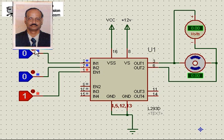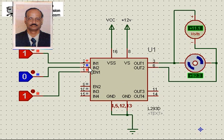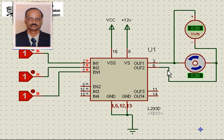Now the moment I make one of them as 1, you see the motor starts rotating at a particular speed. You can see the voltage here is about 11.1 volts out of the 12 volts supplied. The motor is rotating in this direction — this input is high and this is low. Now supposing I make this also high, the motor will stop, because the moment both inputs are high, both outputs are low and the motor will stop.